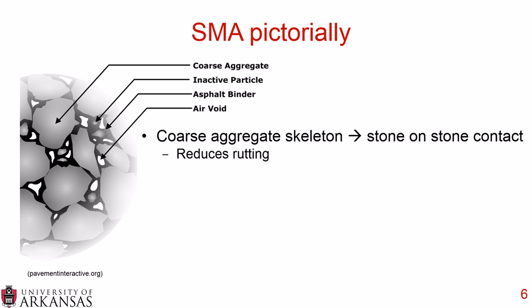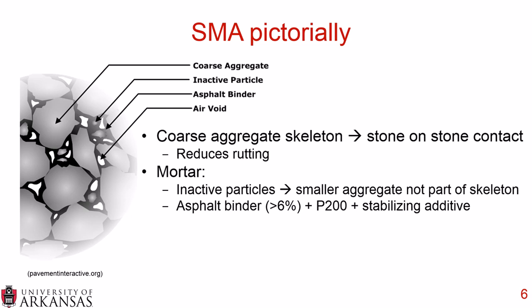Looking at SMA through a pictorial lens from pavementinteractive.org, you can see pictorially that SMA has coarse aggregate which provides the skeleton and stone-on-stone contact, reducing rutting potential. You then have the mortar — called inactive particles in this pictorial — which are the smaller aggregates not part of the skeleton. As part of this mortar, we have the asphalt binder, generally polymer modified and usually greater than 6%, along with the P200 dust material and the stabilizing additive.